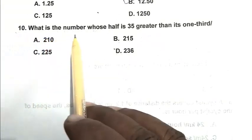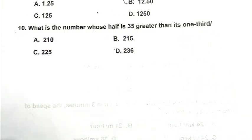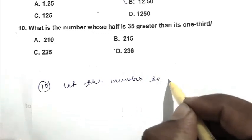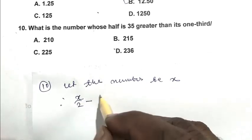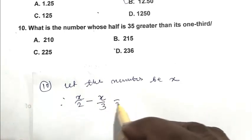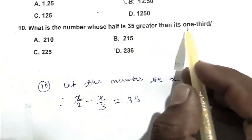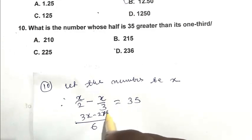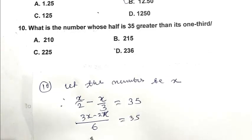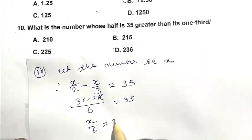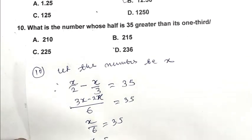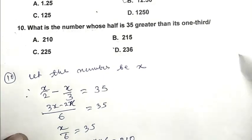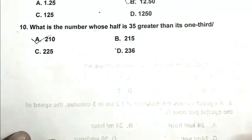Question number 10: What is the number whose half is 35 greater than its one-third? Let the number be x. Then x/2 − x/3 = 35. So (3x − 2x)/6 = 35, or x/6 = 35, or x = 35 × 6 = 210. So A is the right answer. Thank you for watching. Have a good day.